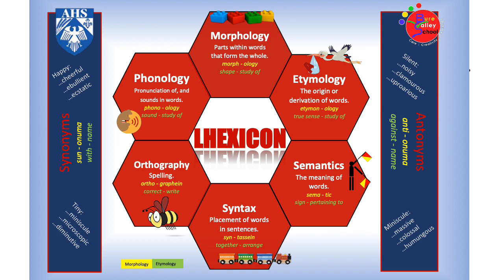There are six stages that you can go through when you're looking at a particular word. You don't have to go through all of them, but if you do then you'll have a really thorough understanding of that particular word. So I'm going to take you through each stage and explain what each one involves.